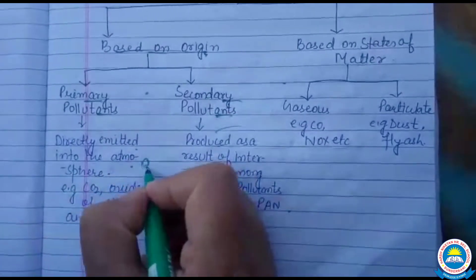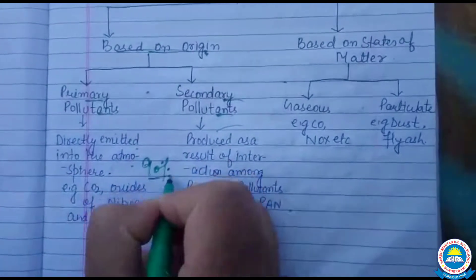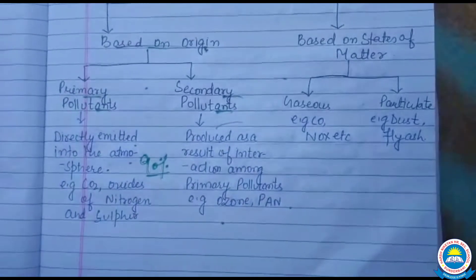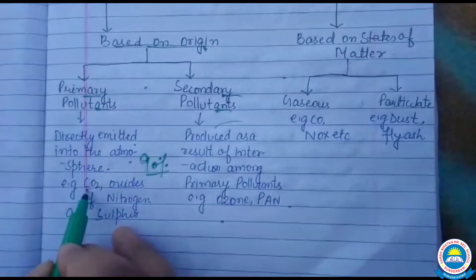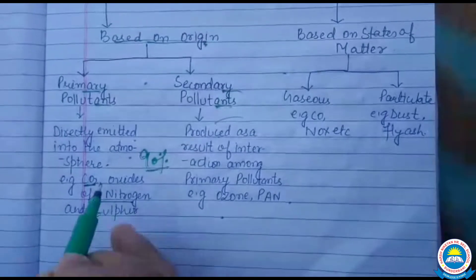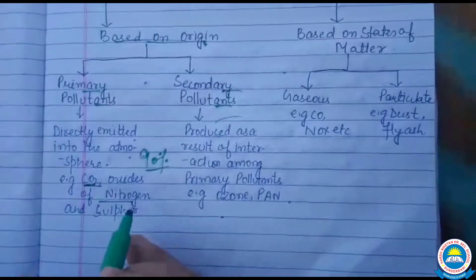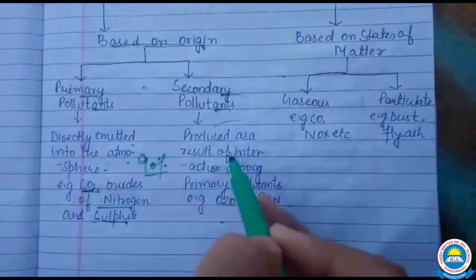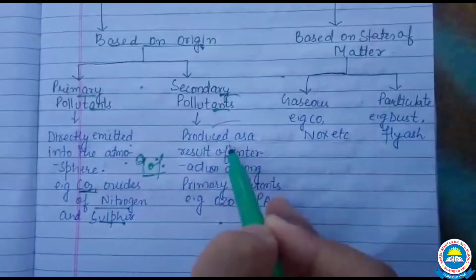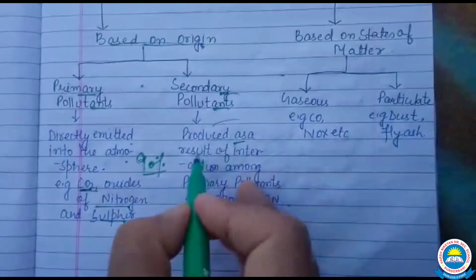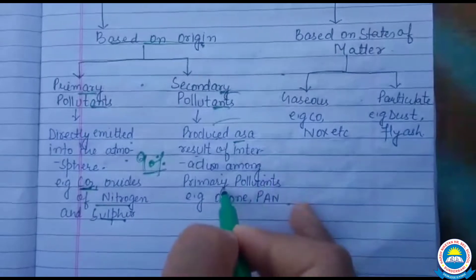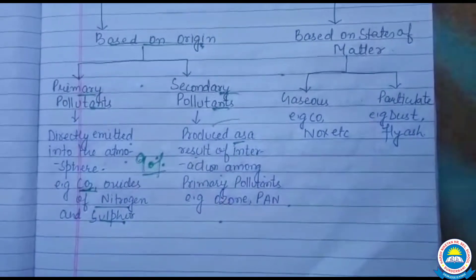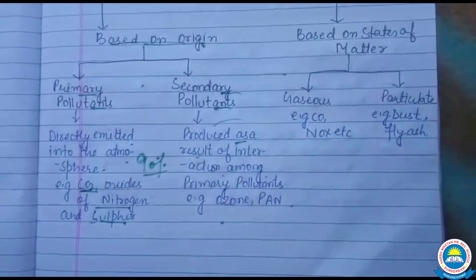Primary pollutants account for about 90% of the pollution they create and emit. For example, we have oxides of nitrogen, carbon dioxide, and sulfur. Secondary pollutants are produced as a result of interaction among the primary pollutants — when two primary pollutants interact and a reaction is formed.